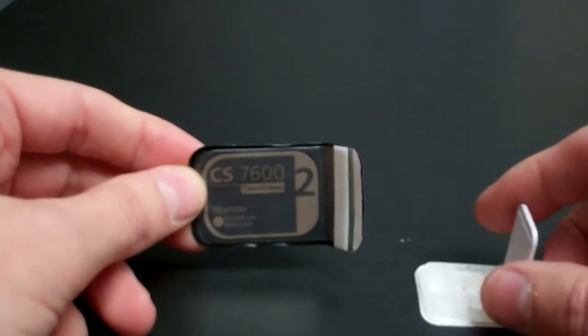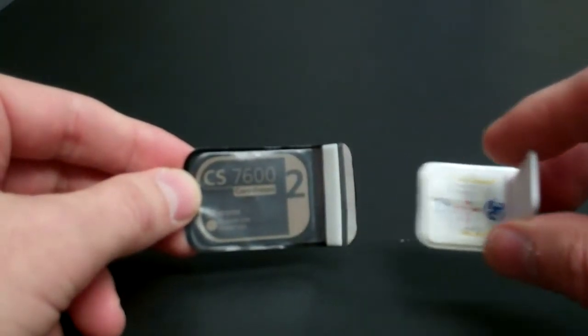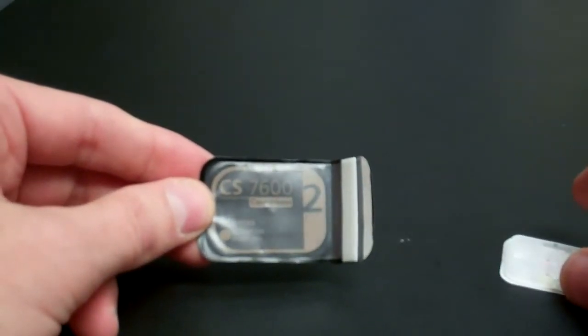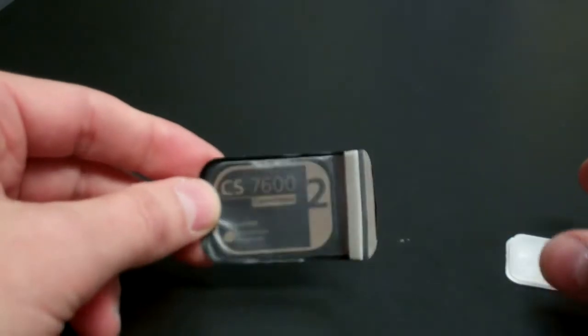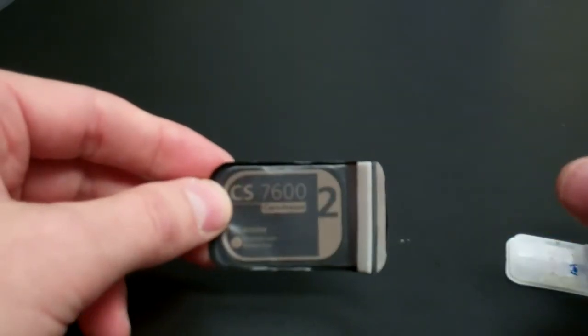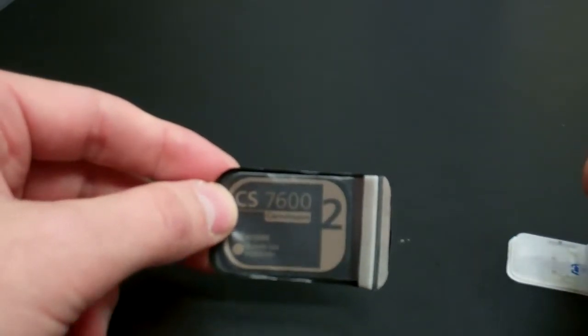This video is going to demonstrate the Unigrip version for film and phosphor plates with the CareStream 7600 phosphor plate. This is a size 2 7600 phosphor plate in the standard envelope.